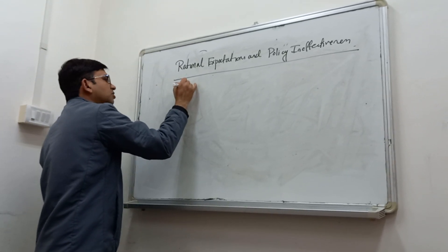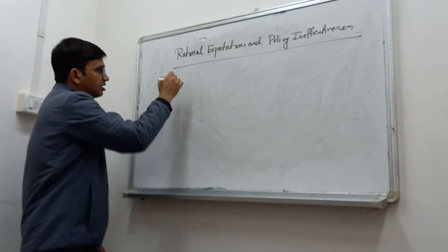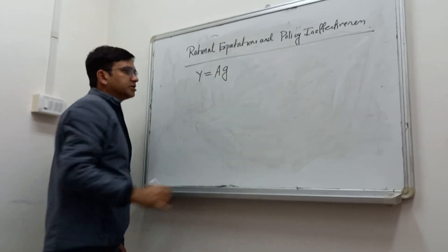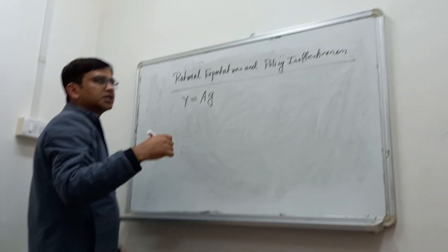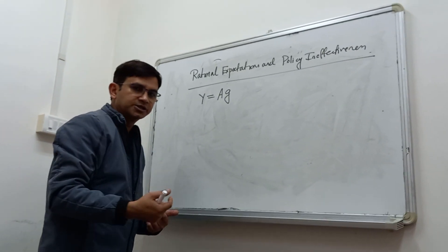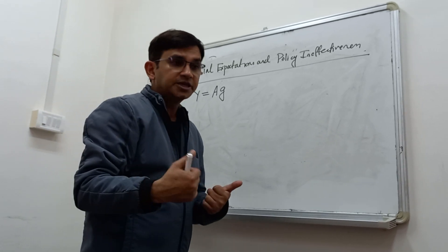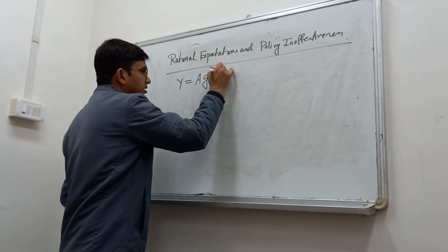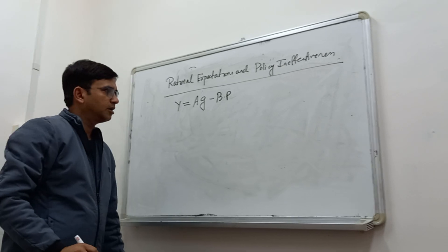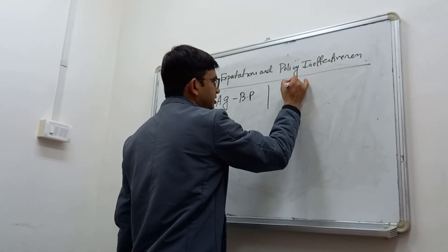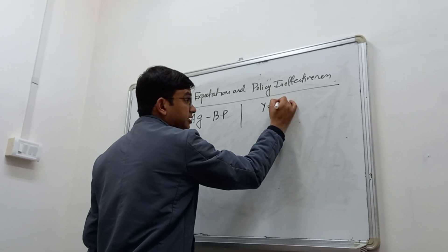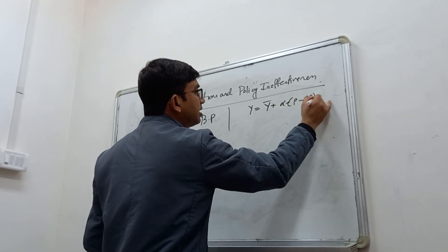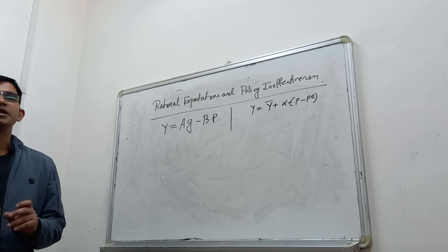Whenever we frame the demand function, we will consider the government policy. G is the government policy parameter — specifically the aggregate demand management policy. It may be expansionary fiscal policy or expansionary monetary policy. The supply function is given as the usual short-run aggregate supply function: Y = Ȳ + α(P − PE), without any random variable for now.